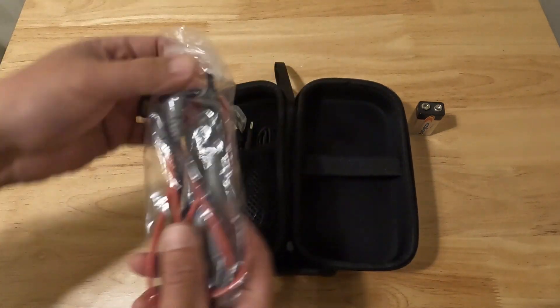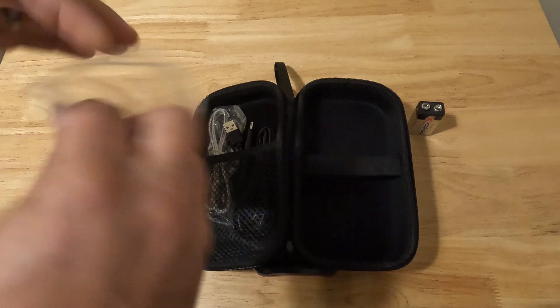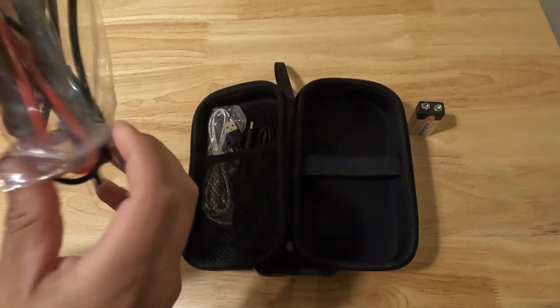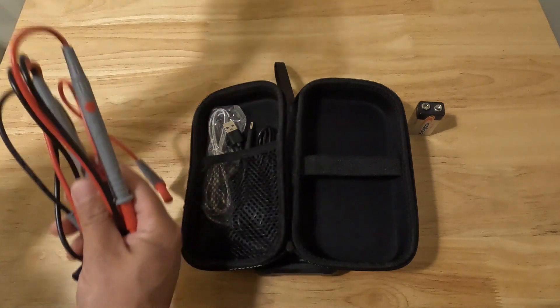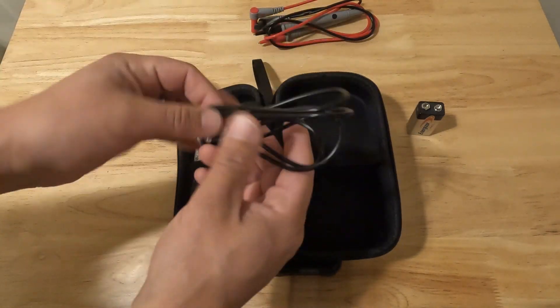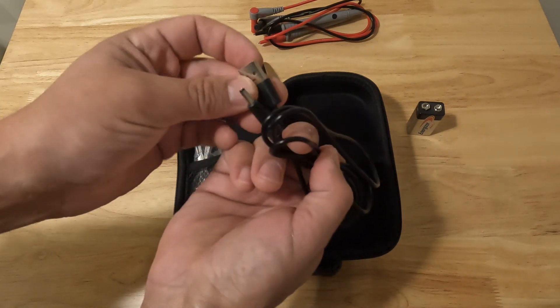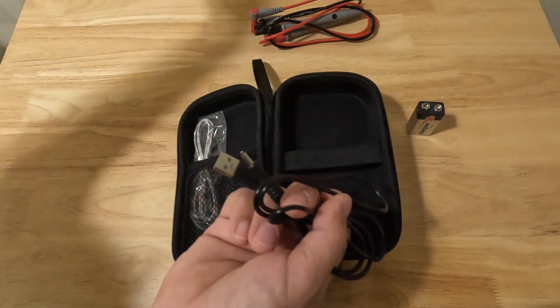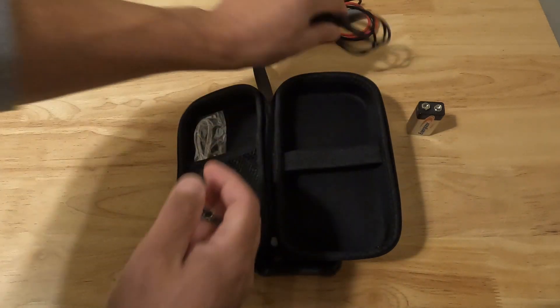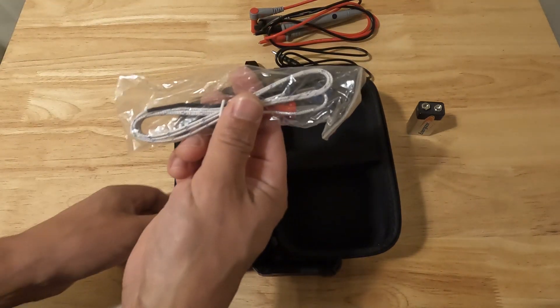Inside the case you can see we have our probes, then we have our charger. It's a USB charger, it does not come with a USB adapter for the wall, so you're going to have to buy that if you want to charge it from a wall. And then this is our temperature probe.